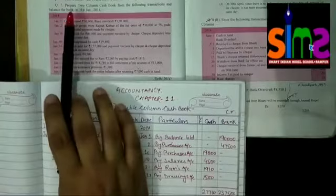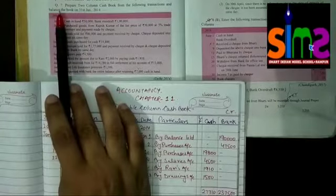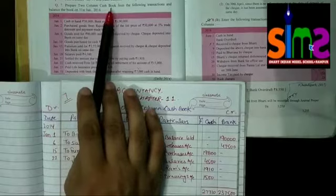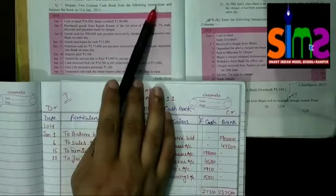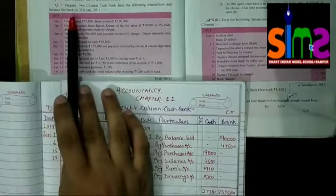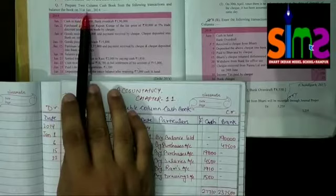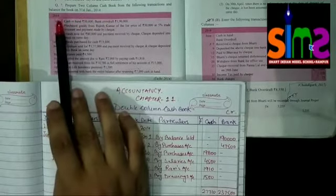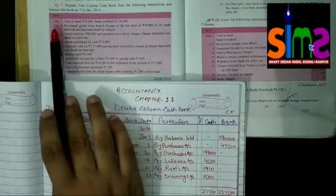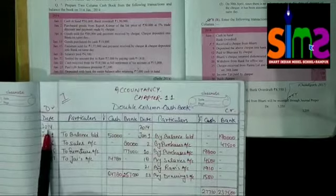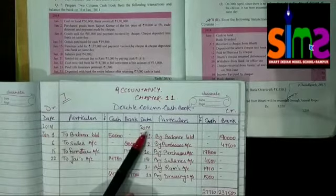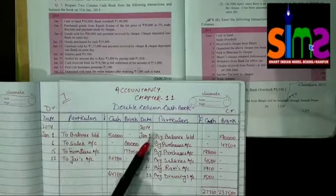Today we will do question number 7: prepare a two-column cash book from the following transactions and balance the book on 31st January 2014. I have noted 2014 in both side date columns and the month is January.